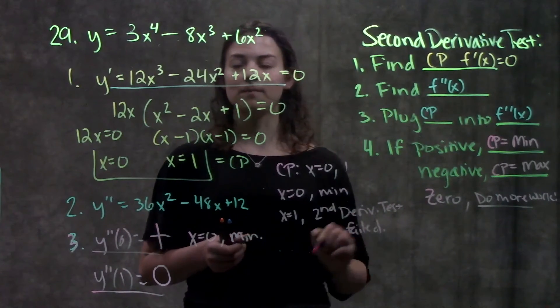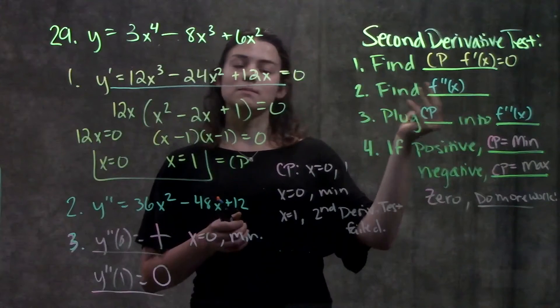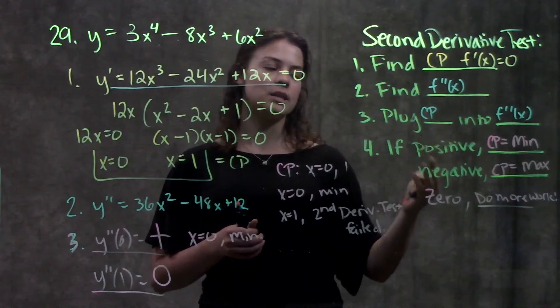And that's it for this problem. We just found our critical points, plugged them into f double prime of x, and then checked the sign. I hope you found this video really helpful. The concepts covered in this video are true no matter what calculus class you're in, but all the sections and problems I referenced were from this textbook right here.